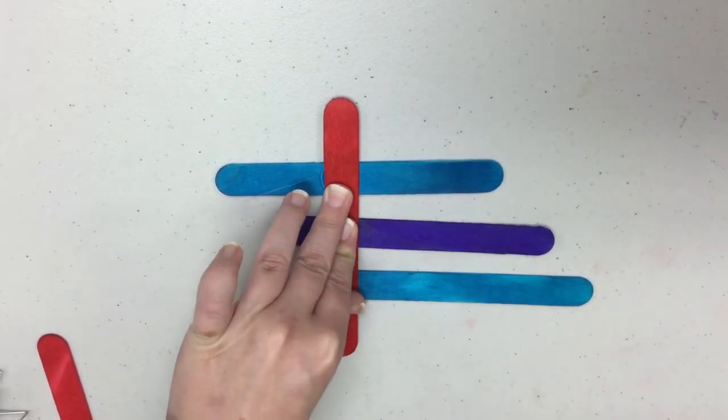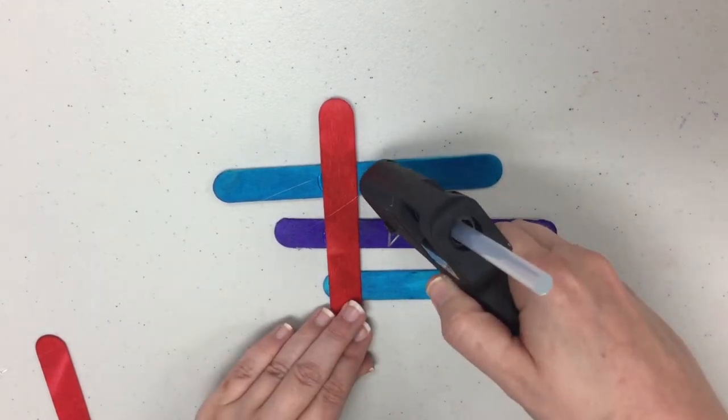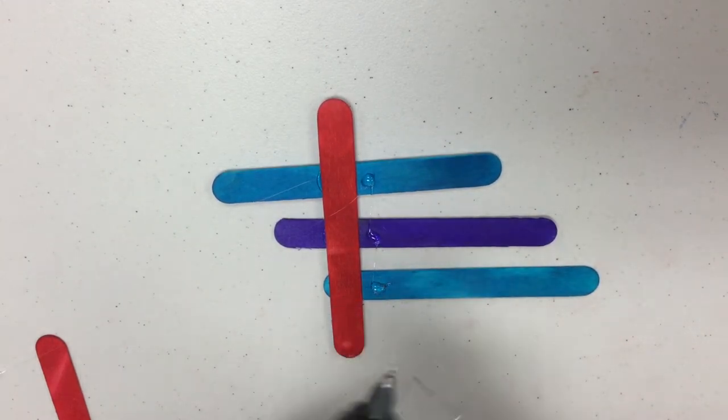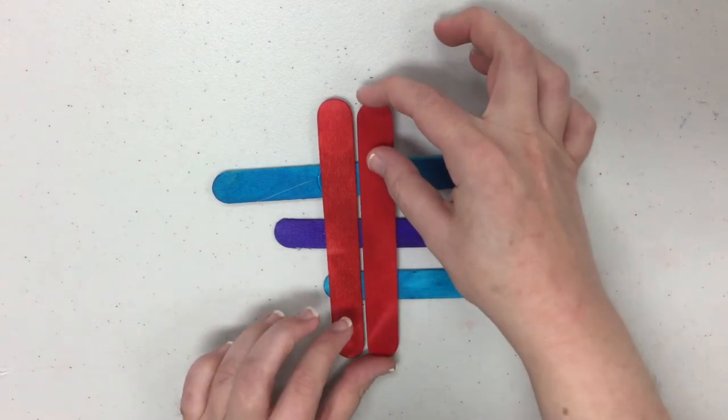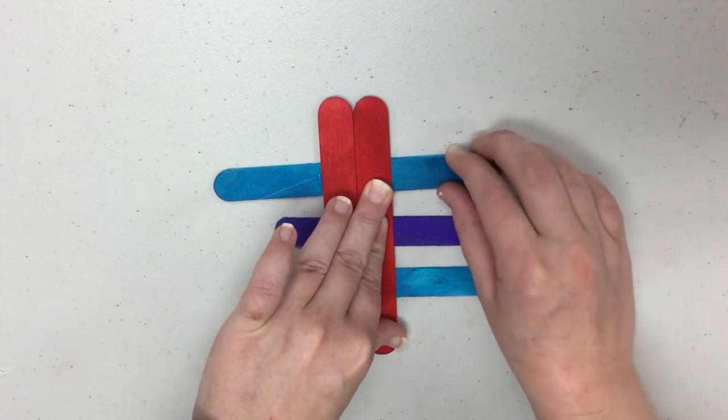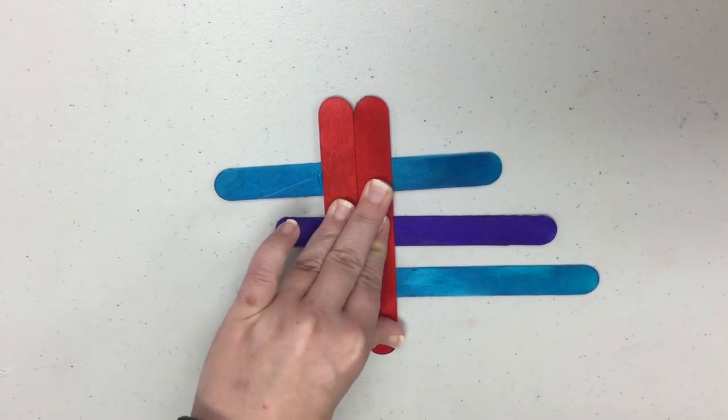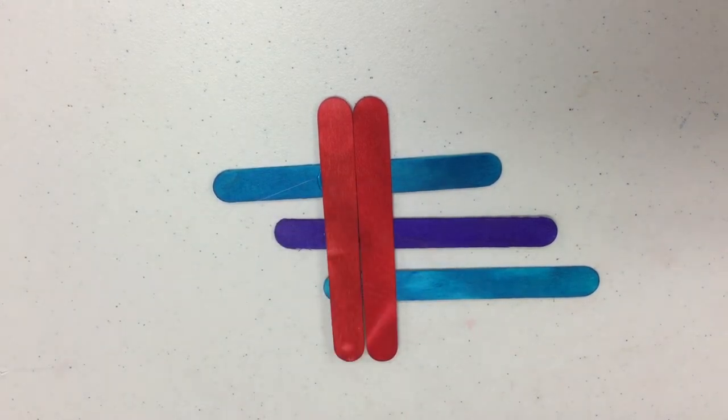You might want to hold it a second so you know it stays and then take three more dots of hot glue just like that lay that second craft stick back down again hold it just a second so you know it stays in place and it should look just like that.